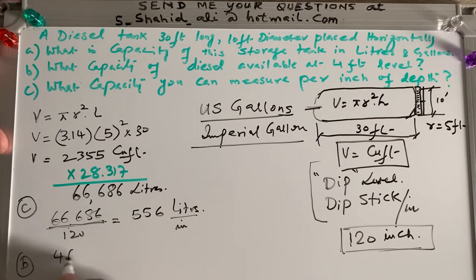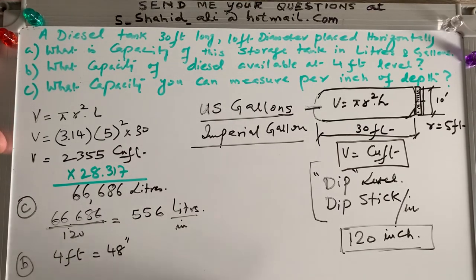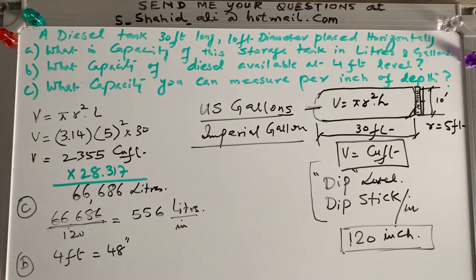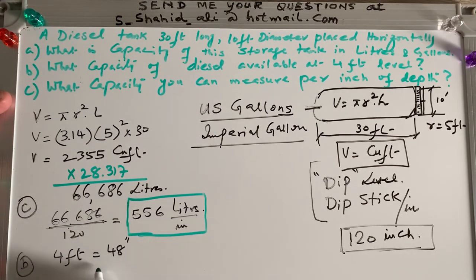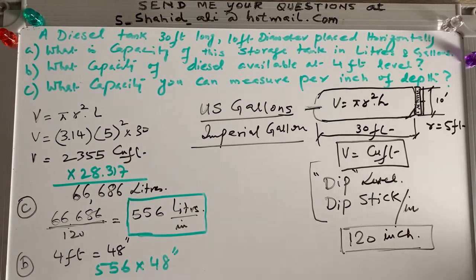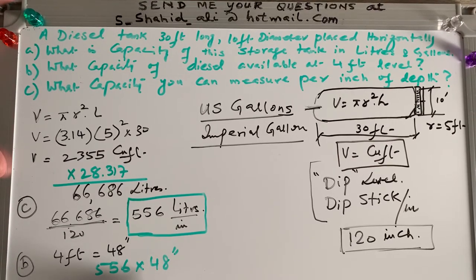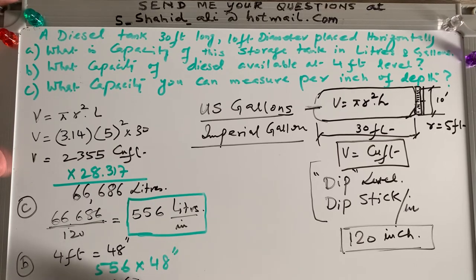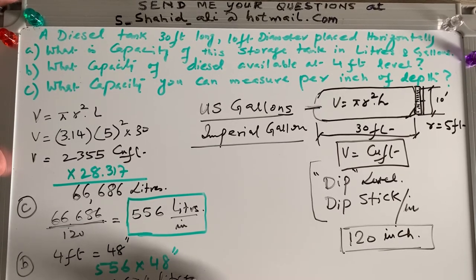So the B part was that what capacity available at 4 feet. 4 feet means 48 inch. 4 feet, I convert it into 48 inches because my level gauge is now in inches. I have this 556 liters per inch. So I can say that if you have 556 liters per inch and I am looking at 48 inch. So 556 liters per inch times 48 inch, I will get what is my level at 4 feet of level. 4 feet means 48 inch. So I multiply it and 556 times 48. So if you multiply it, it will be like 26,674 liters. So these are my liters at 4 feet level.